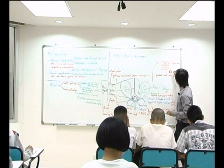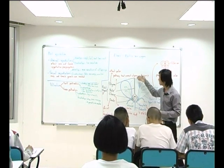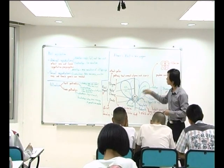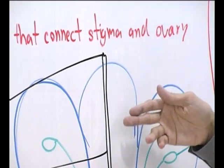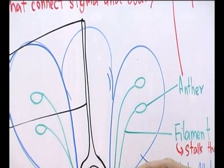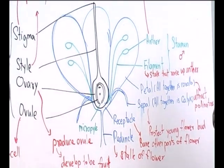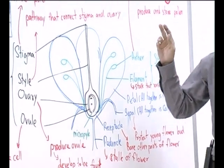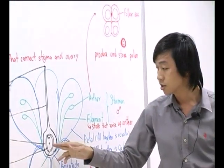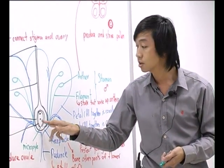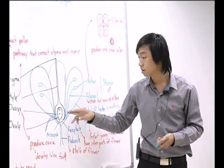When the pollen grain attaches to the stigma of the pistil, the pollen grain germinates a pollen tube through the style and then goes to the ovary, entering through the micropyle. Then the nucleus in the pollen goes to fertilize with both nuclei in the ovule.